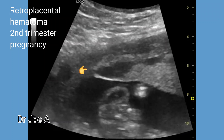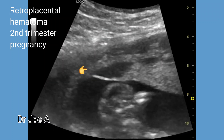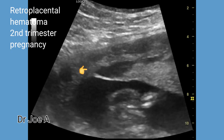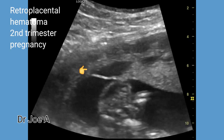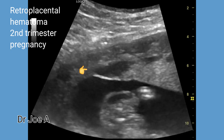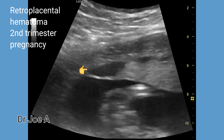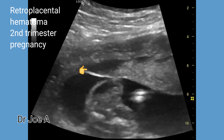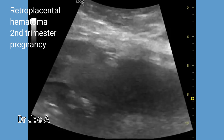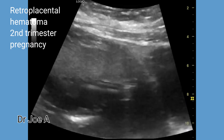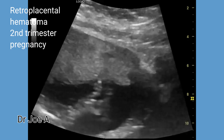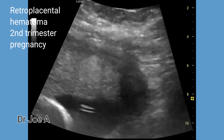This second trimester pregnancy came with a history of pelvic pain and bleeding. The placenta is anterior and the upper border shows a hypoechoic collection. Let's slide the probe downwards to the lower border of the placenta.